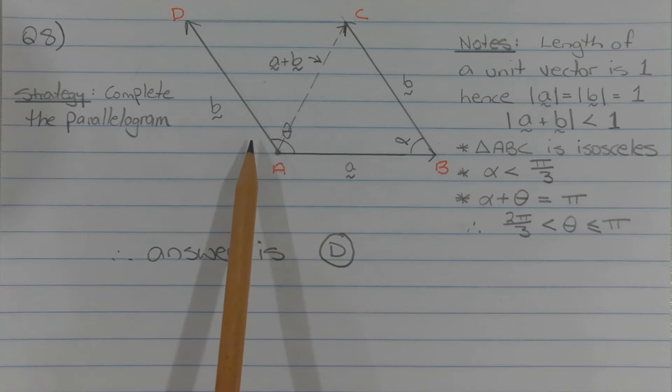So in isosceles triangle ABC, the angle at the apex, so that's this angle alpha, must be less than pi over 3.